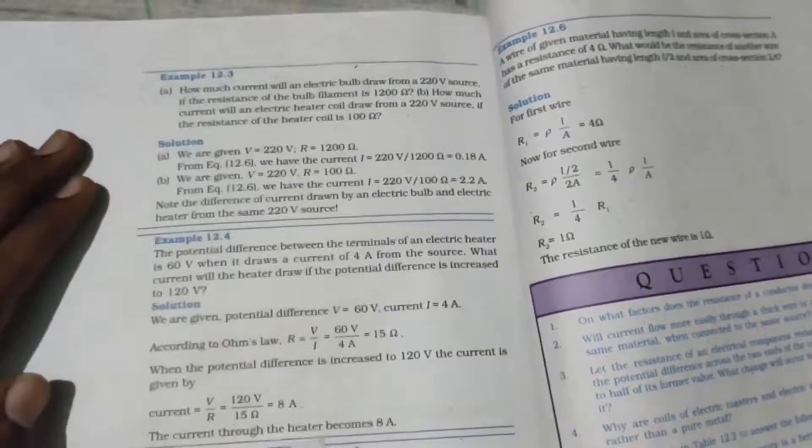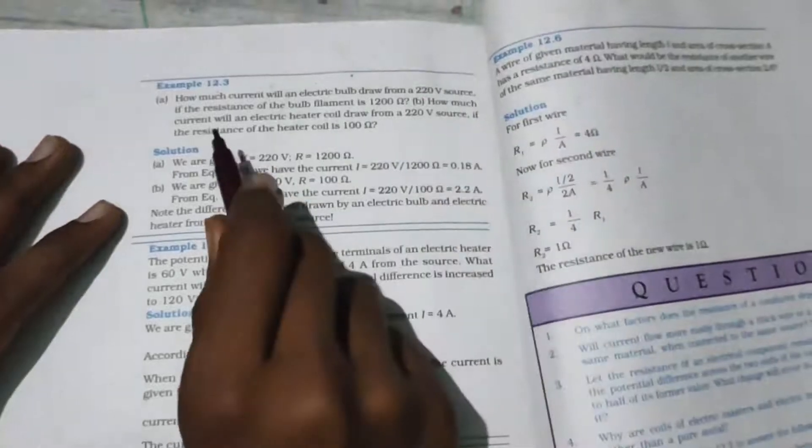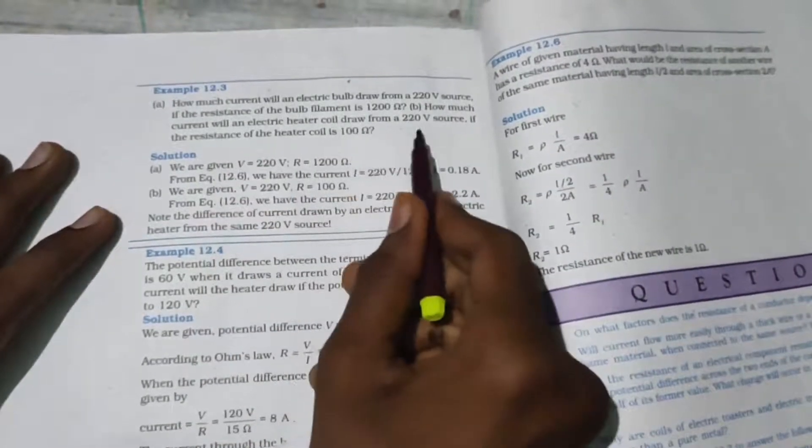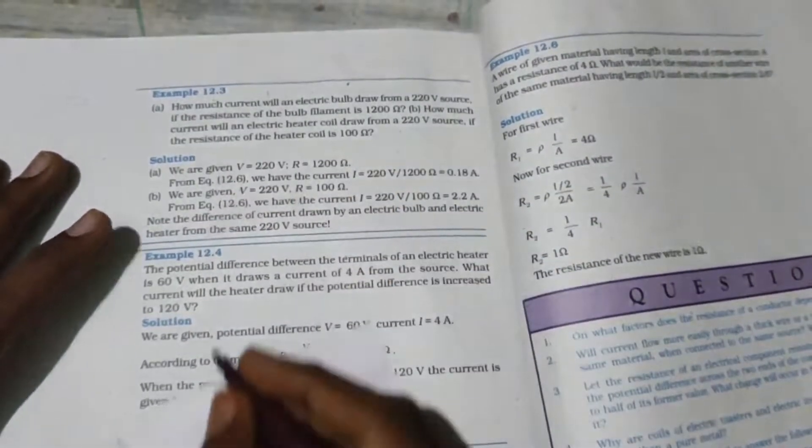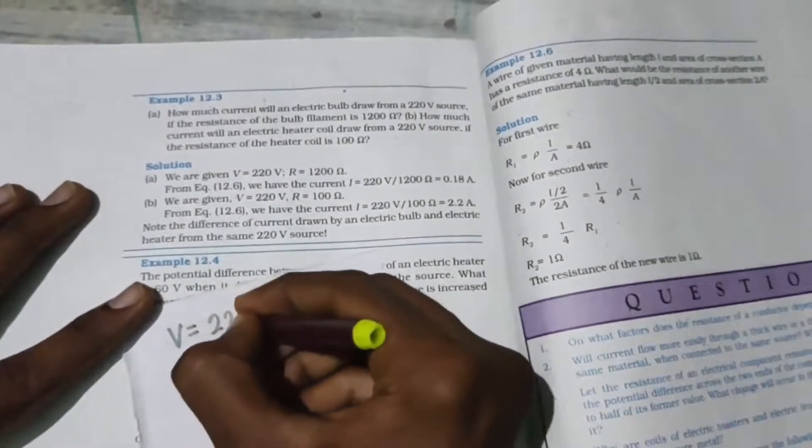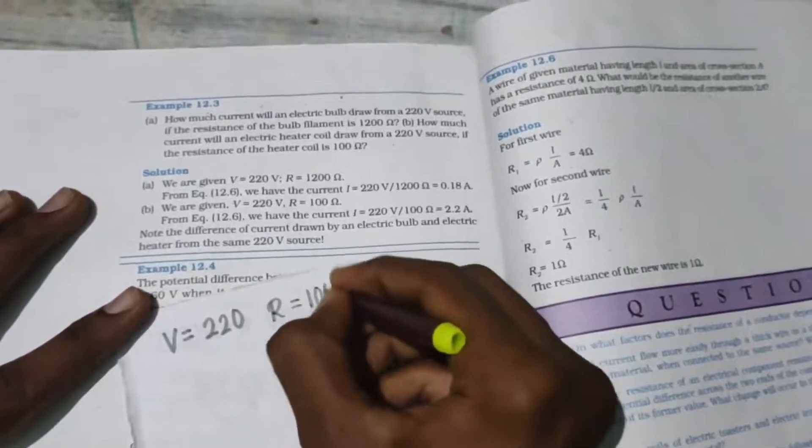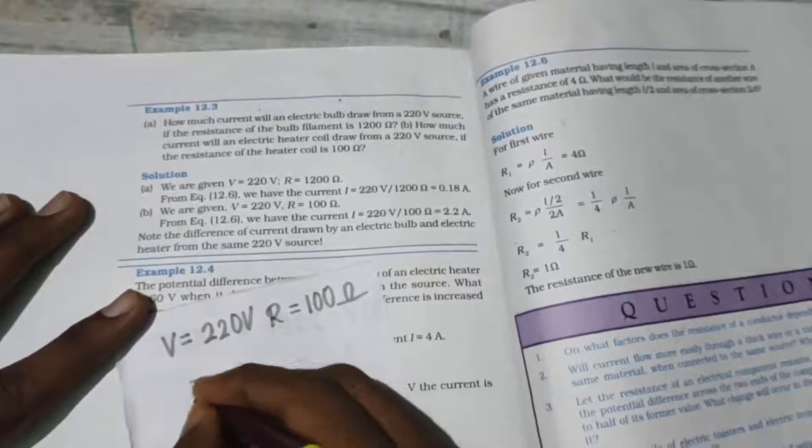Next is part B, same type. How much current will an electric heater coil draw from 220V source? Now you have to see: potential difference is 220V and resistance is 100 ohms. So again they are asking you for current.